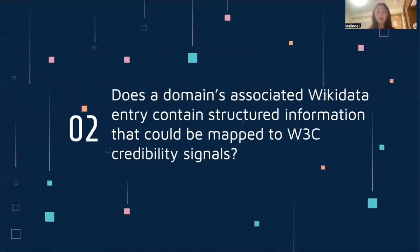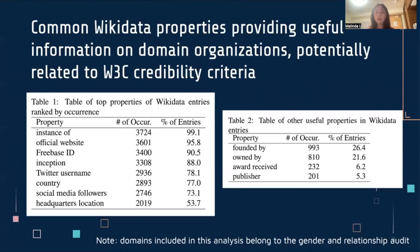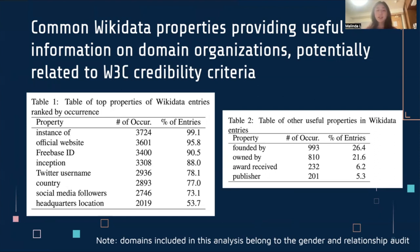Our second research question was: does a domain's associated Wikidata entry contain structured information that could be mapped to W3C credibility signals? To answer this question, we examined the common properties that appeared on the Wikidata entries we collected. As you can see from the first table, instances of official website and inception are often present on Wikidata entries, with occurrence rates over 80%. They are all useful background information on a domain's organization, potentially relating to W3C credibility criteria such as publication type. Some other useful information, like founded by, owned by, and awards received, that more directly correspond to W3C credibility signals are also present. However, they're more sparsely populated among Wikidata entries, as you can see in the second table on the right.